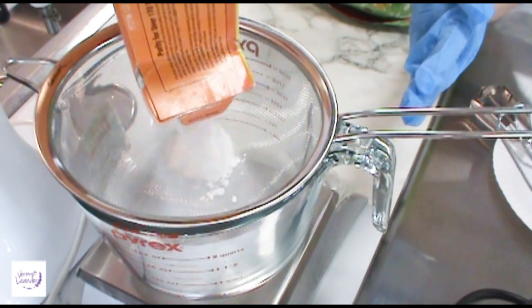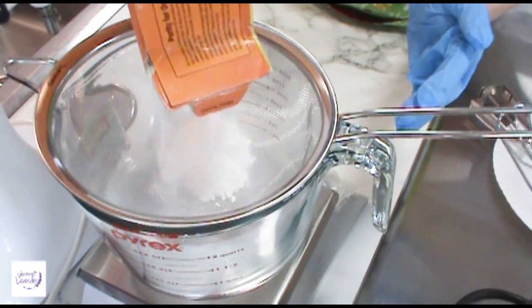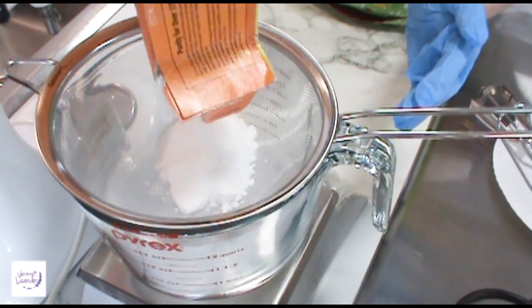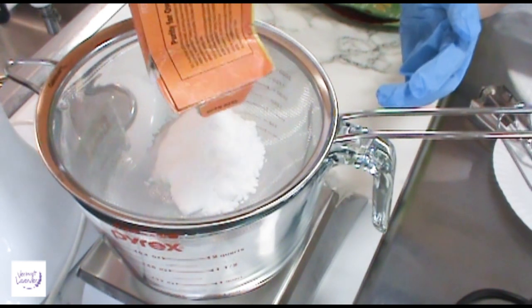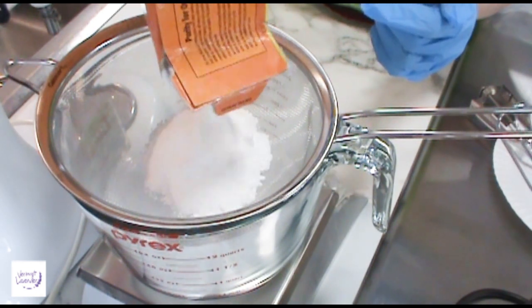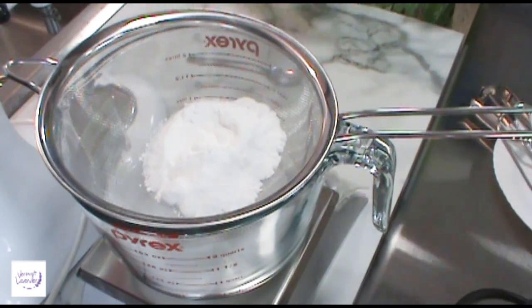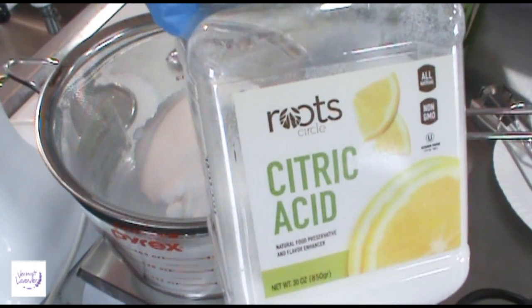Start with eight ounces of baking soda. This recipe makes about 10 scoops but I'm going to split it so I can have two different scents, and then I will do a demo at the end. Then I'm going to add four ounces of citric acid.